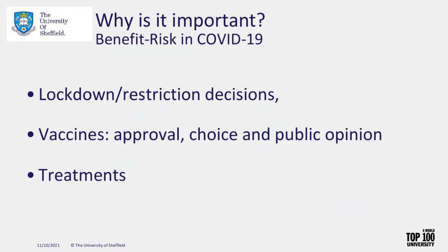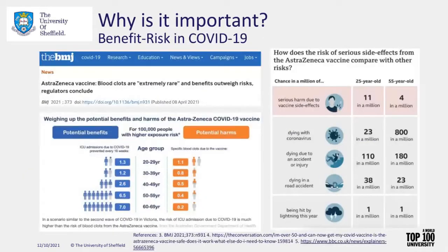Benefit-risk has become so prevalent in discussions since COVID-19, arising around lockdown restrictions, vaccine decisions, and treatment decisions. I've taken three example articles all written around the AstraZeneca vaccine, and as you can see particularly in the two on the left, the terminology of benefits outweighing risks was really important in those publications. These range from the BMJ to a BBC article aimed at the public.